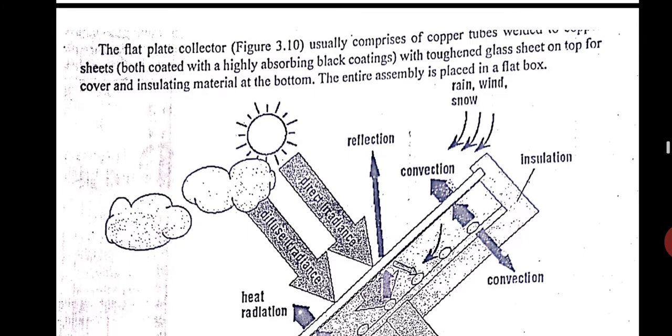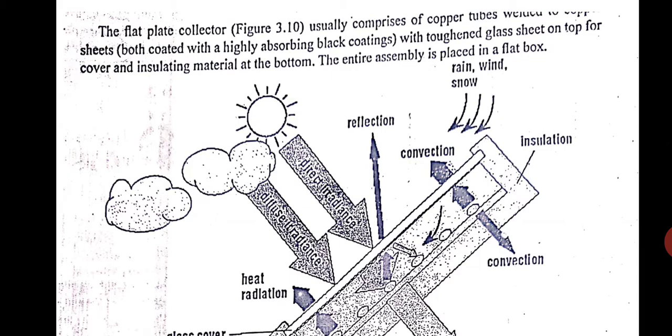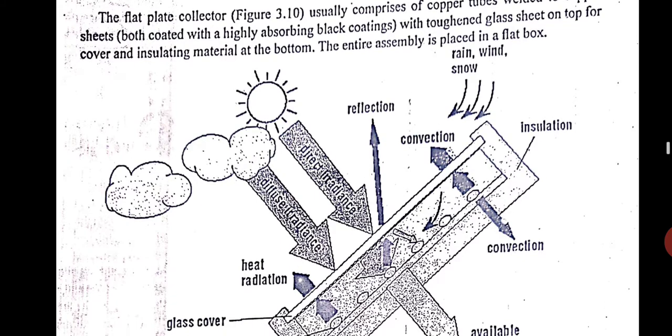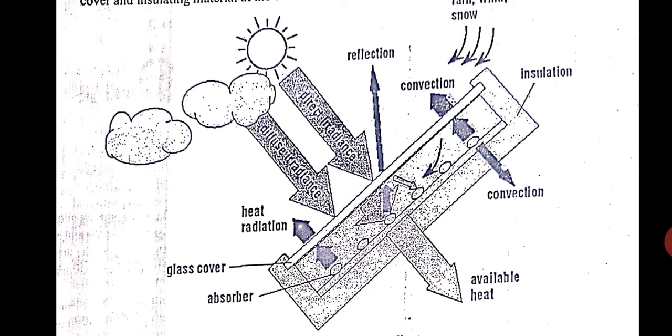The flat plate collector usually consists of copper tubes which are welded to the sheets, and they are both coated with highly absorbing black coating, with a toughened glass rooftop cover and insulating material at the bottom. The entire assembly is placed in a box. You can see here there is a box. Sunlight is falling there on the top, there is a glass toughened glass, and you can see the absorber tubes are there, cross section of the tubes are there, and below that there is a plate and it is covered by insulation and placed in a box.